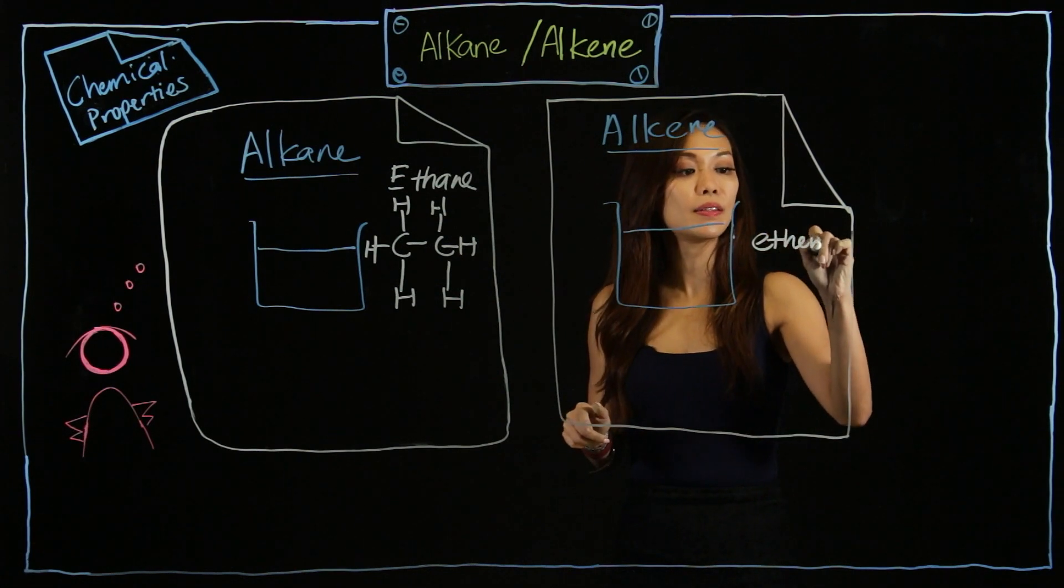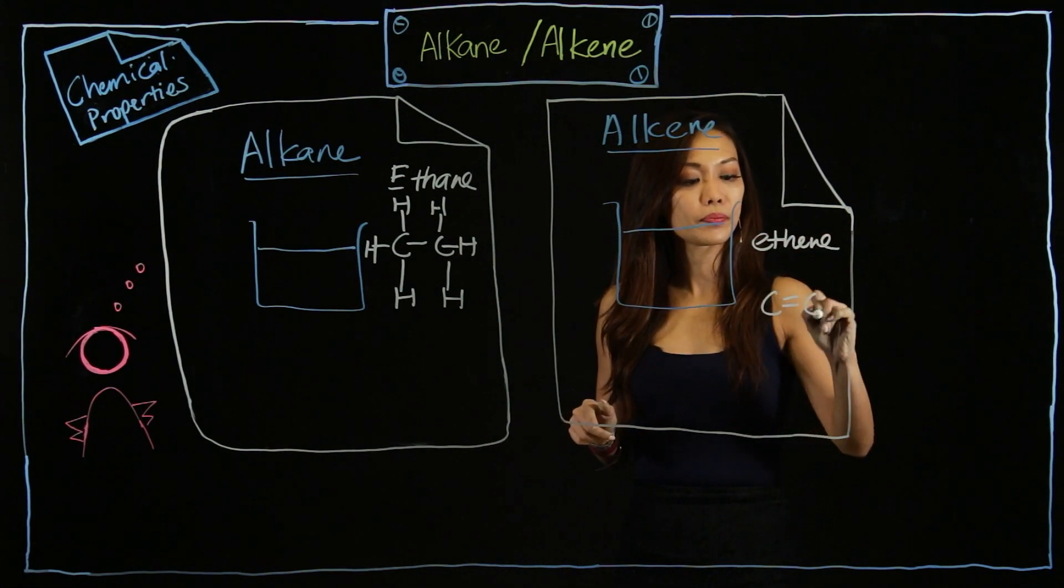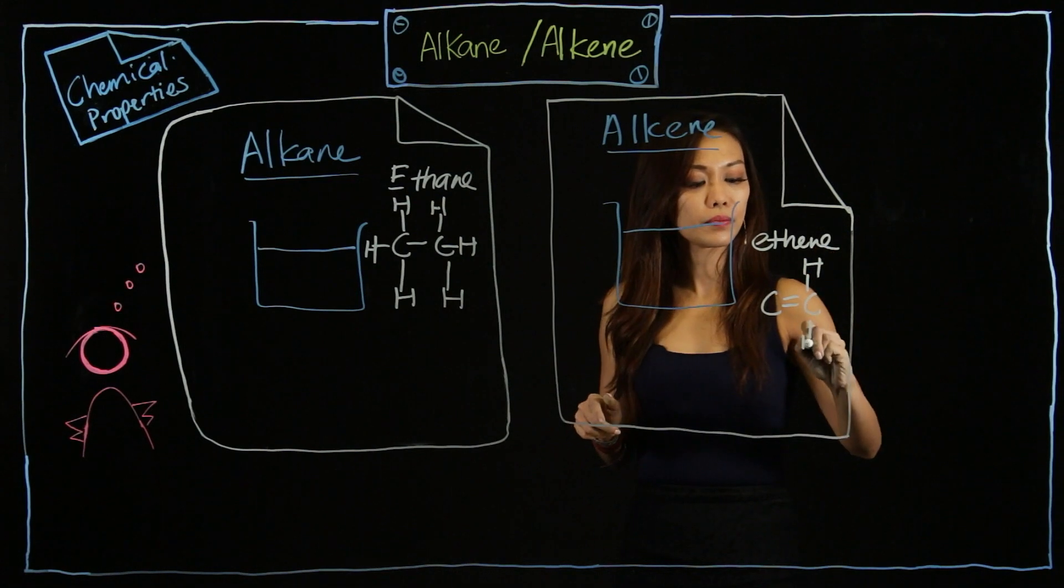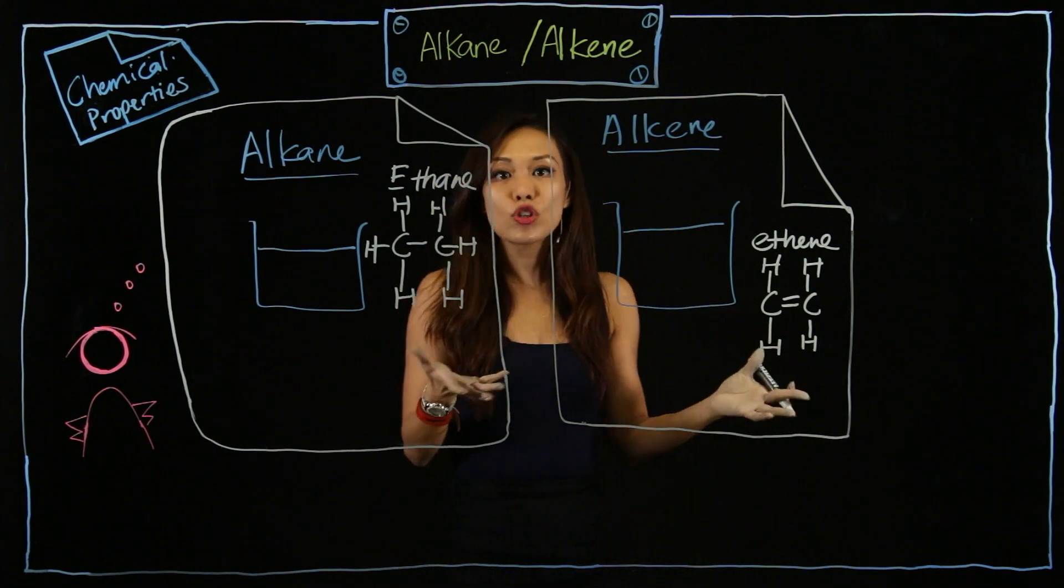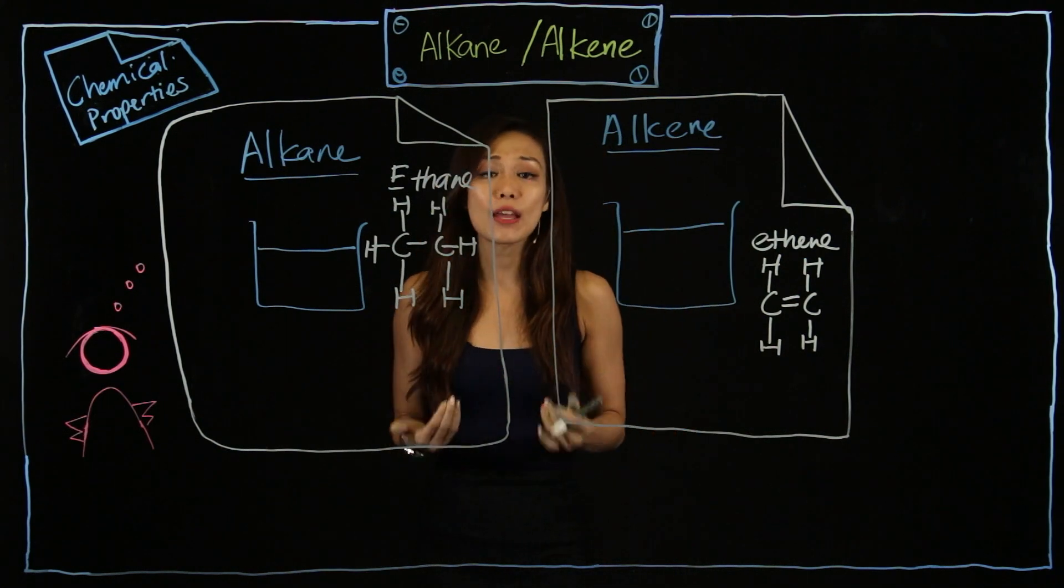Yes, you are right. One has a double carbon, one doesn't have. This is ethane. How about the ethene here? So I'm going to draw here ethene.